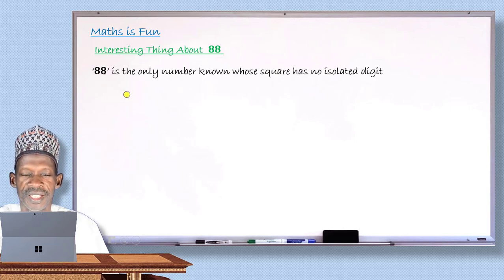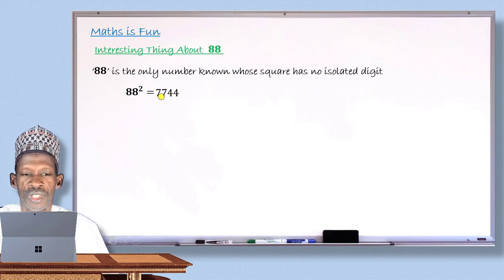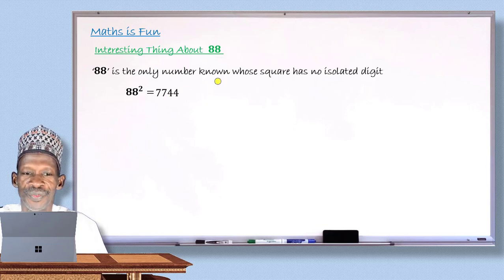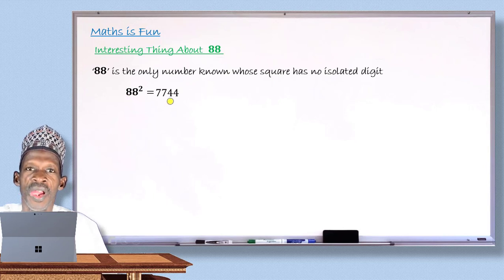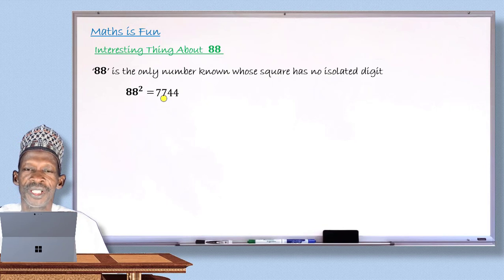88 is the only number known whose square has no isolated digit. If you find 88 squared — that is, 88 × 88 — you get 7744. In this result, you have four digits made up of two different digits: 7 and 4, each appearing exactly twice. There is no digit that appears only once. For all other numbers, their squares will contain at least one digit that appears only once. This is what makes 88 truly special!